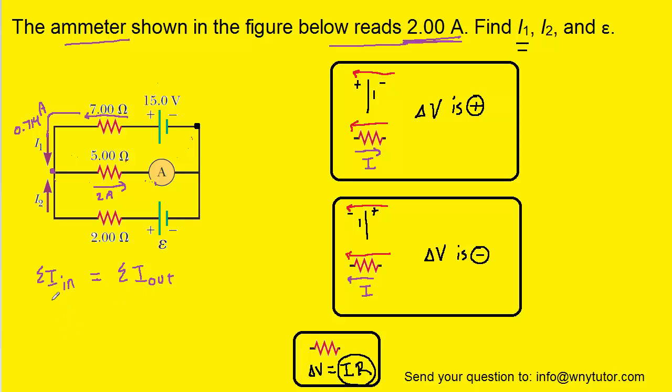So for the total current in, we'll add I1 and I2 and then set it equal to the current out, which was the 2 amps. We'll subtract both sides by 0.714 and we will see that I2 is equal to approximately 1.29 amps. So that would be the correct answer for I2.